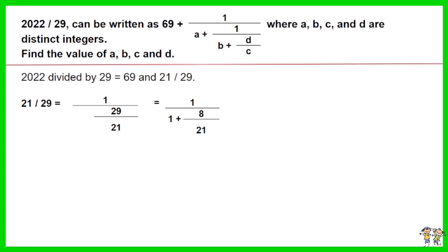8 over 21 is equal to 1 over the value of 21 over 8. Express the value of 21 over 8 as 2 plus 5 over 8.